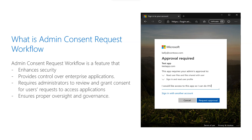When Admin Consent Request Workflow settings are enabled and a user tries to access an application but is unable to provide consent, they can send requests for admin approval as shown in the image on the site. The request is sent via email to admins who have been designated as reviewers. A reviewer acts on the request and the user is notified of the action.